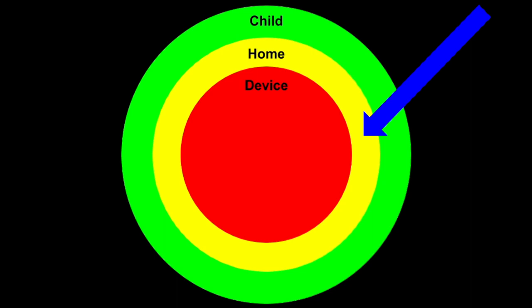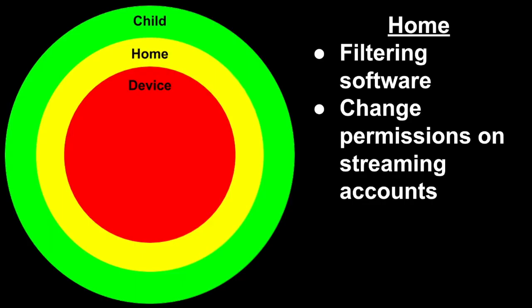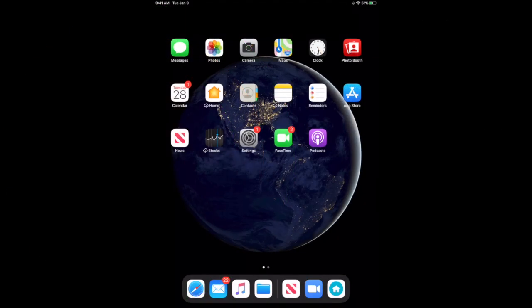So those are some boundaries at the child level involving parenting decisions. Let's talk now about boundaries at the home level — changes you can make to devices that everyone has access to. One example is filtering software. I'm going to show you one called Disney Circle, which filters and sets permissions on your home internet. I'll also show you strategies for changing permissions on your streaming accounts — YouTube, Amazon Prime, and Netflix.